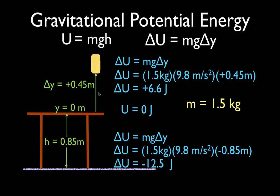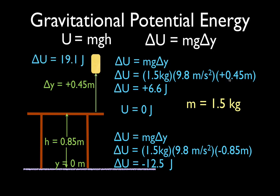We could just as easily ask: what happens if we move the object from the floor up to the raised position? What would be the change in the potential energy? In that case, the easiest thing to do would be to move our 0 on the Y axis to the floor. Then the change in height is 0.85 plus 0.45, which is 1.3 meters. The mass is the same, acceleration due to gravity is the same, the change in height is 1.3 meters. Multiplying 1.5 times 9.8 times 1.3, the object has a change in potential energy of 19.1 joules relative to the floor. And you can see that's the same number as 12.5 plus 6.6, which is also 19.1.